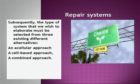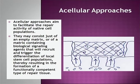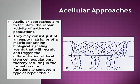The type of repair system we wish to elaborate must be selected from existing different alternatives: a cellular approach, a cell-based approach, or a combined approach. A cellular approach aims to facilitate the repair activity of native cell populations — stem cells. This may consist of just an empty matrix, or a matrix containing biological signaling agents that recruit and trigger the differentiation of local stem populations into chondrocytes.